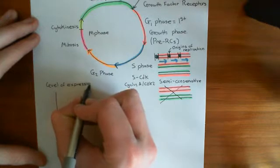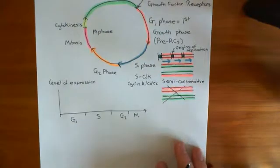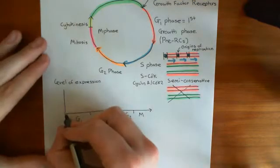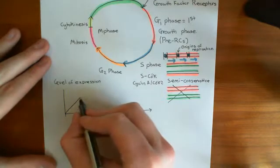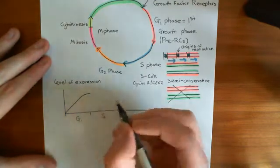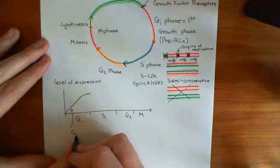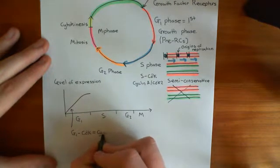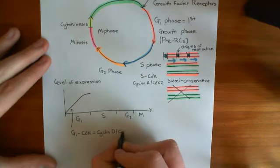We're going to talk about the different cyclin-dependent kinases because these really drive the different processes happening at different points along the cell cycle. They're very important. In G1 phase, you have a gradual rise in the concentration of the G1 CDK, which is also called the cyclin D-CDK4 complex.